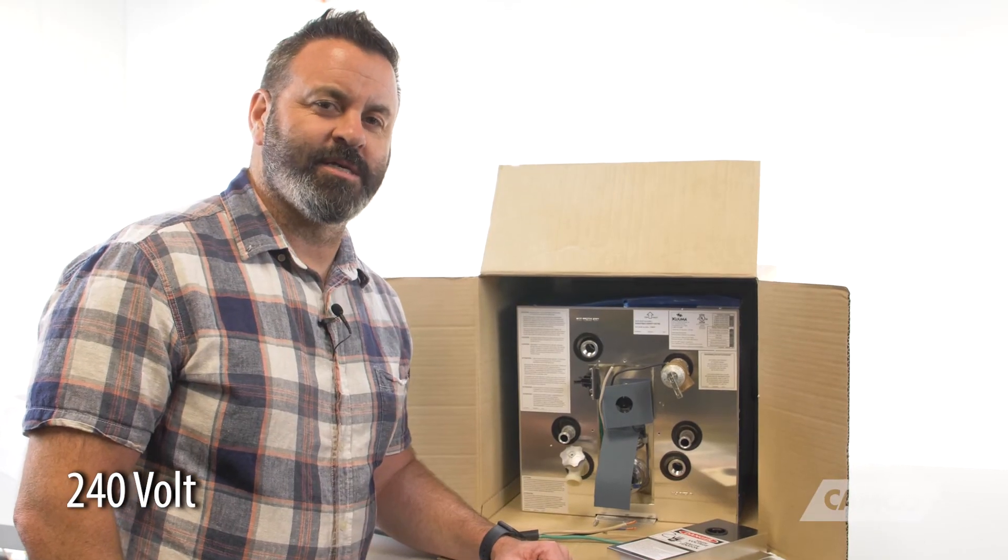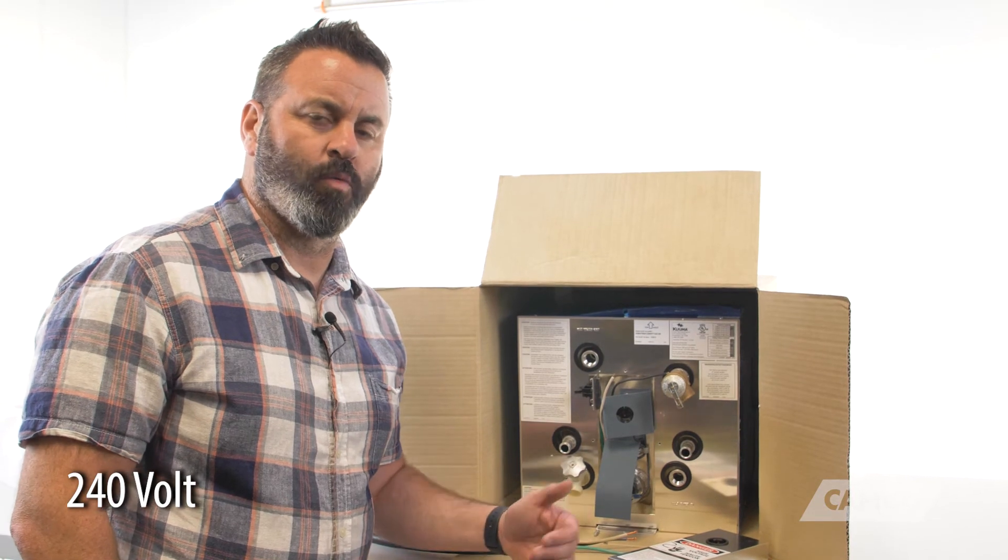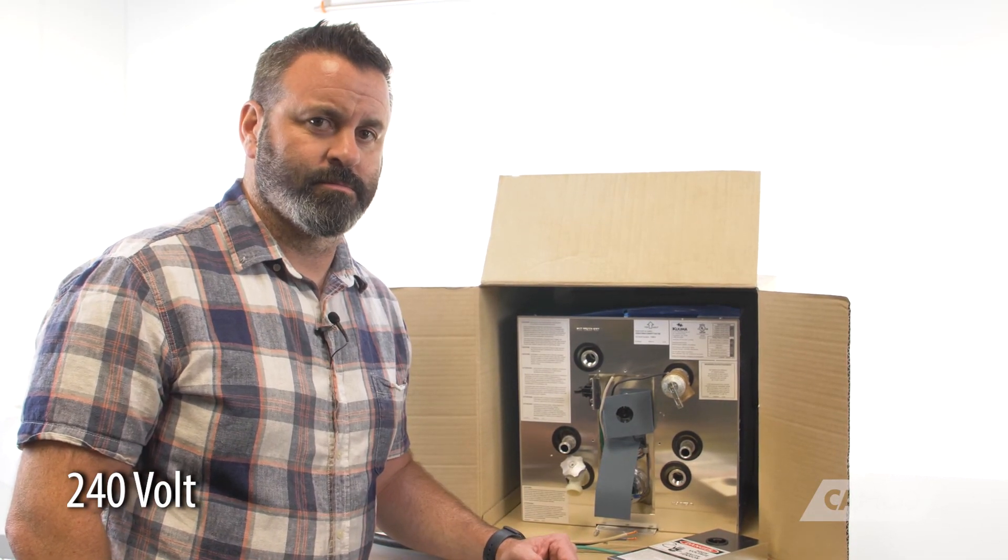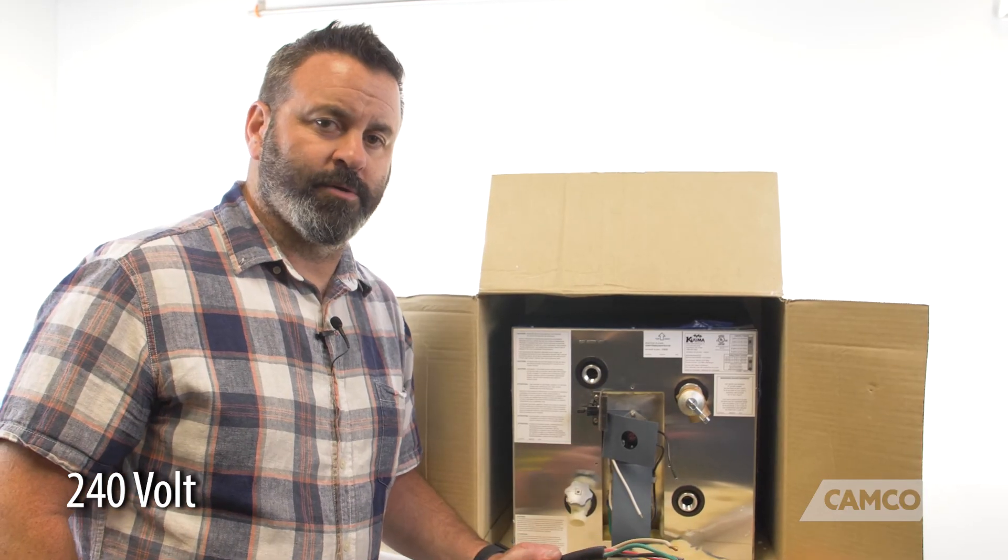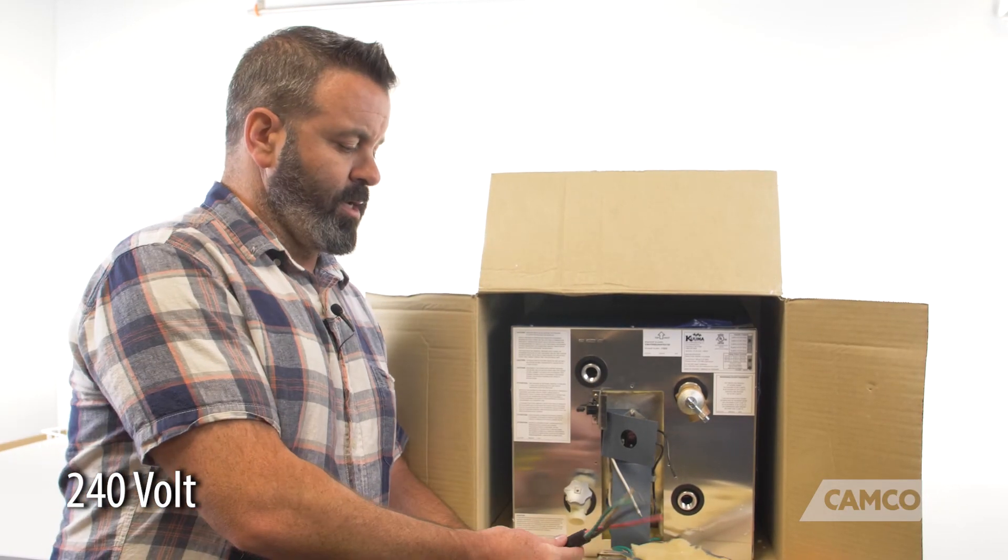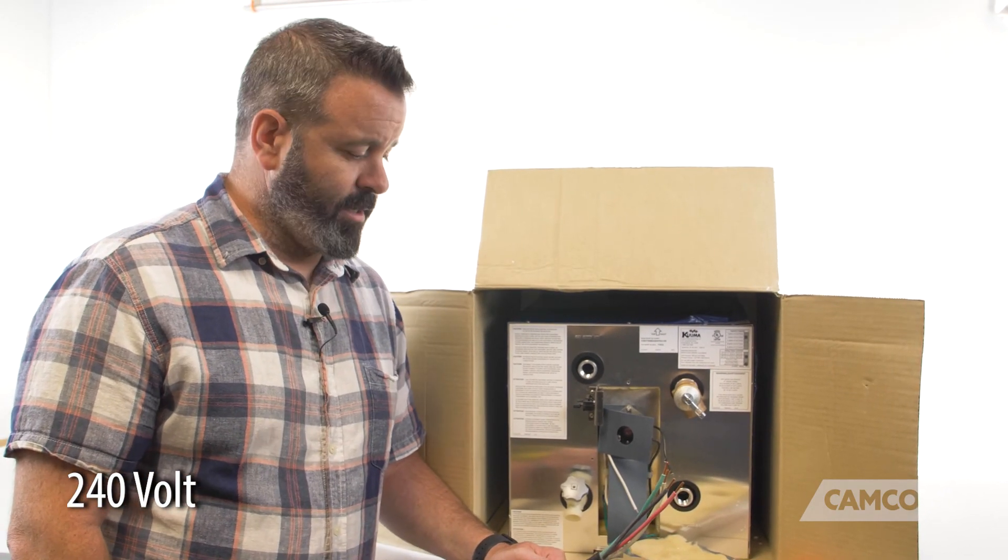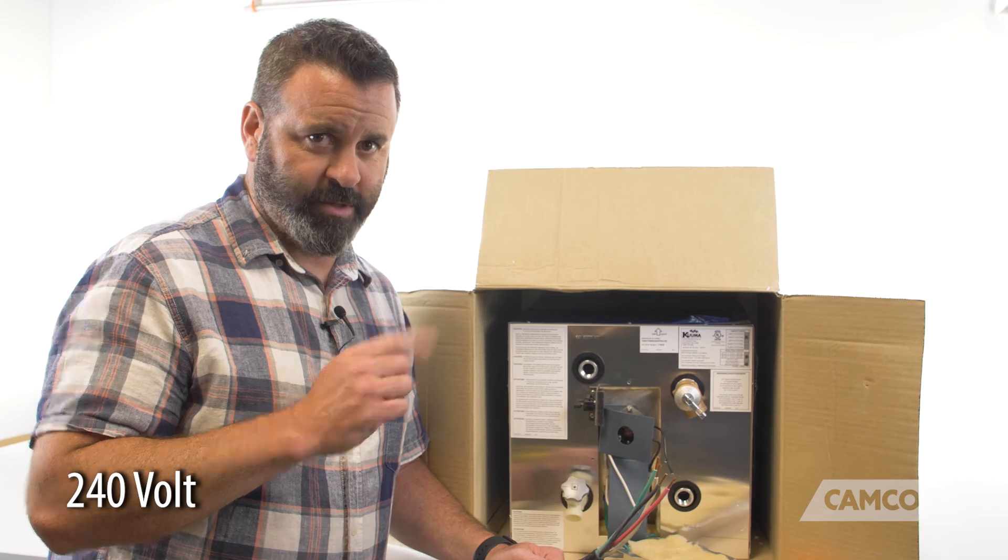Be sure to check the ABYC and Coast Guard regulations for proper wiring for boats, and if you're not sure what you're doing, probably should get an electrician to hook this thing up for you. And after you make your connections, you're going to put the access panel back on and make all of your other water heater connections, and make sure it's filled with water before you turn it on.